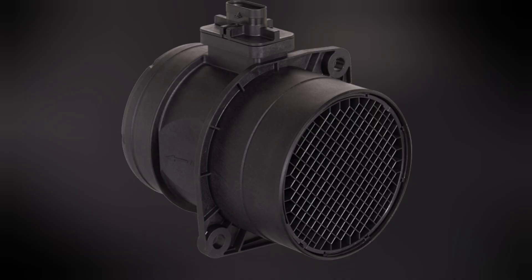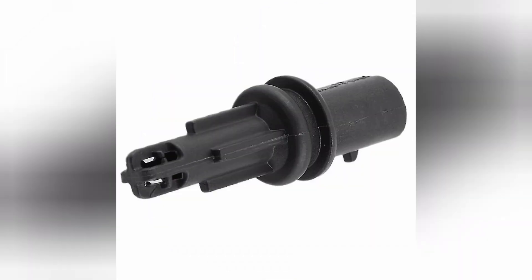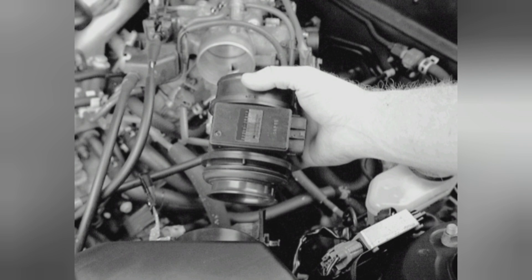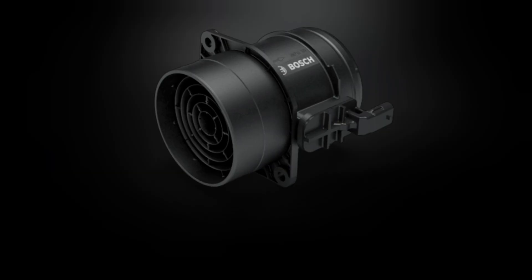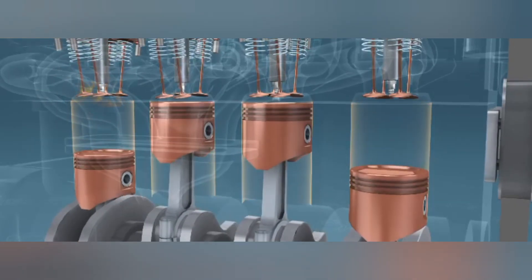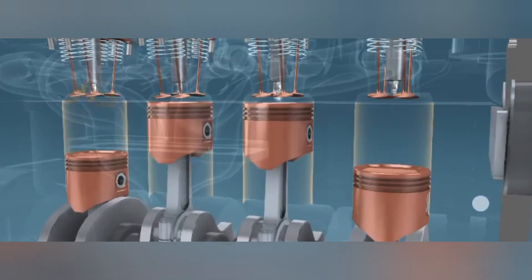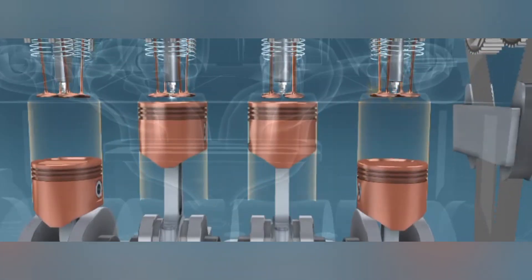Air mass sensor: the air mass sensor is an important component of the engine control system. It is located between the air filter and the engine's intake manifold. In some cars, the intake air temperature, IAT, sensor is built into the mass air flow sensor. It measures the amount of air entering the engine and sends this information to the ECM or PCM, which then determines how much fuel to inject into the engine.